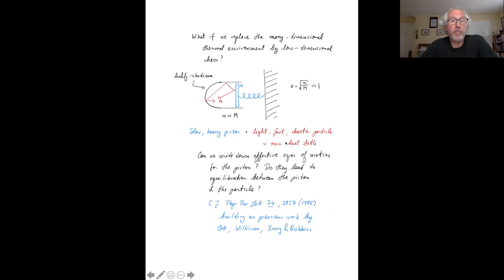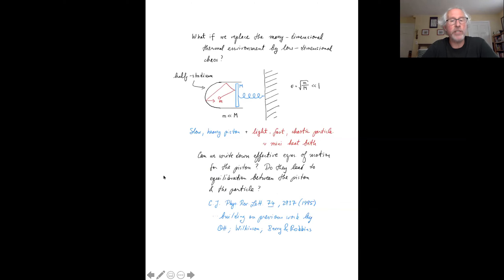The question is: does this fast particle act as a kind of miniature heat bath on the slow particle? Can we write down explicit effective equations of motion for the piston? Do they look similar to the Langevin equation from traditional Brownian motion? And do these equations of motion lead to equilibration between the piston and the particle? Just to give a preview, the answer to all these questions is yes. I'm going to describe results published in a paper from 25 years ago, which I worked on when I was a young postdoc.